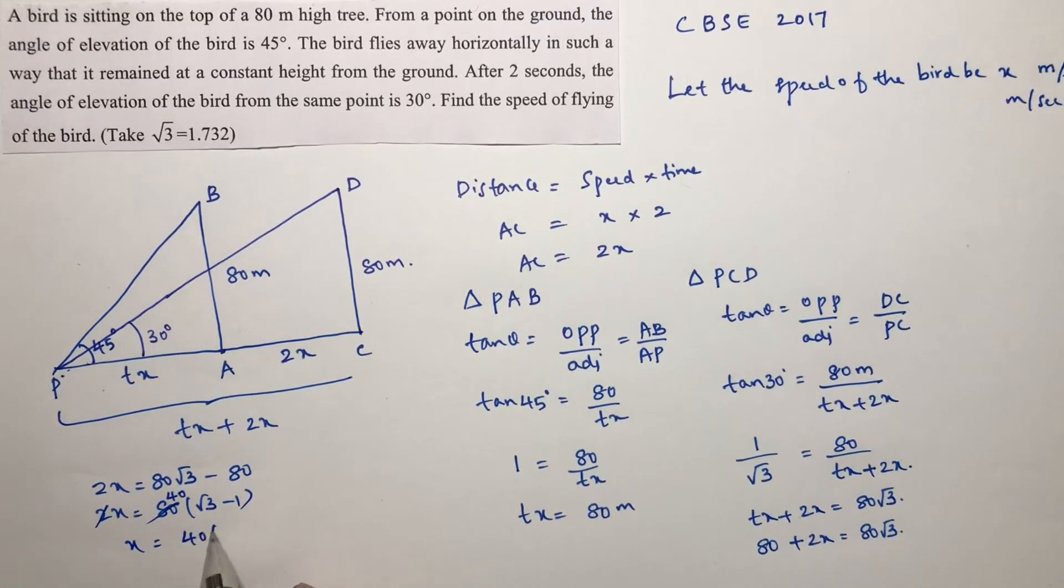2x equals 80 if I take common root 3 minus 1, 2 times 40, so x equals 40 into root 3 minus 1.